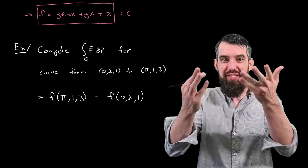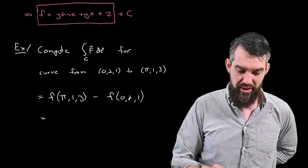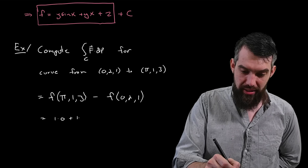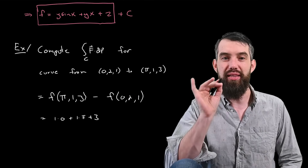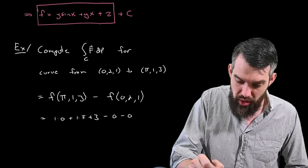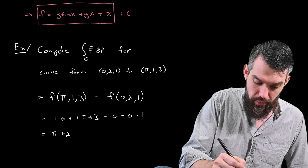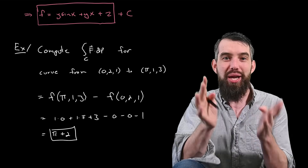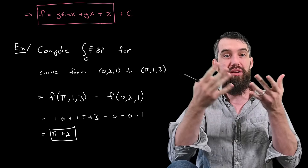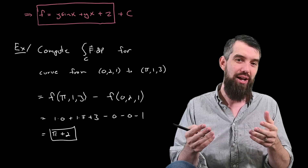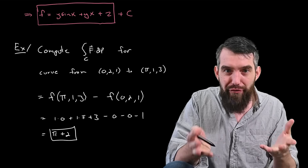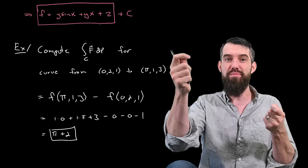I know f, so let's evaluate. At (π, 1, 3): y is 1, sin x = sin π = 0, so the first term is 0; plus 1 times π plus 3, giving π + 3. Minus f(0, 2, 1): x is 0, so we subtract 0 + 0 + 1, which is 1. Final answer: π + 2. The point isn't really the answer — it's how easy the fundamental theorem of line integrals made this computation once you knew the field was conservative. You do the work of finding the scalar potential function once, and then every single line integral becomes trivial: just evaluate at the endpoints.